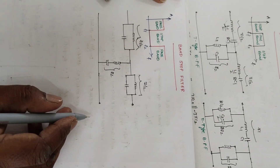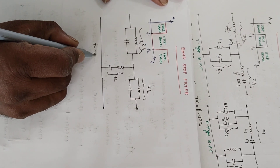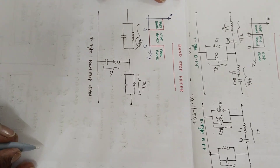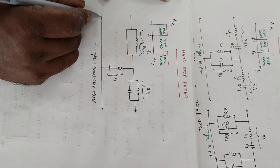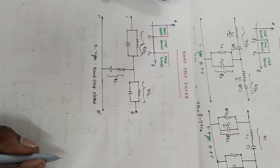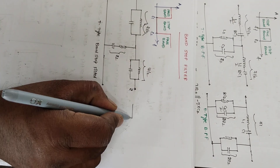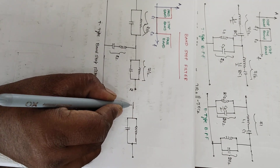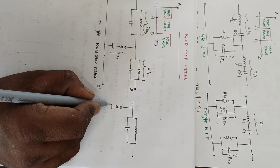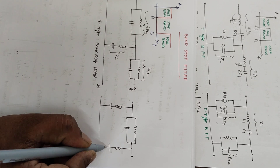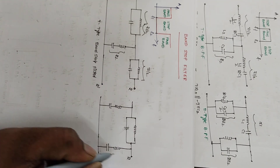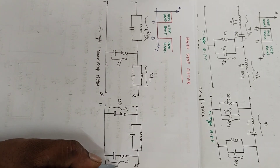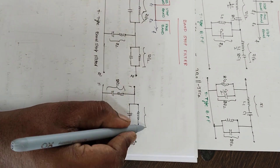This is the T-type band stop filter. Coming to the pi-type network, the shunt branch should be a parallel LC resonant circuit, and the series branches should be series LC resonant circuits. In the pi-type, the shunt element is Z1, and the two series arms are each 2·Z2.